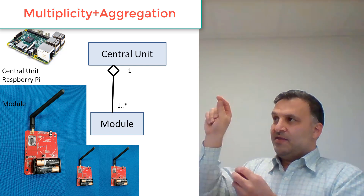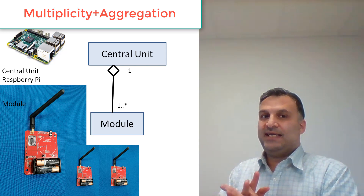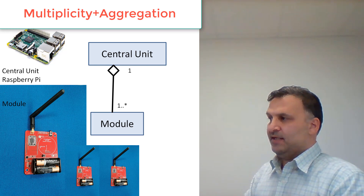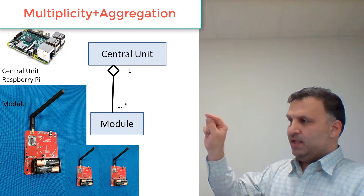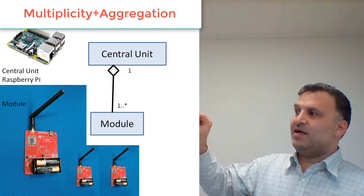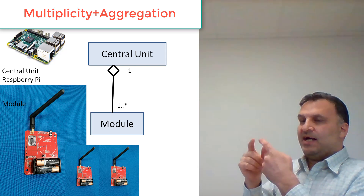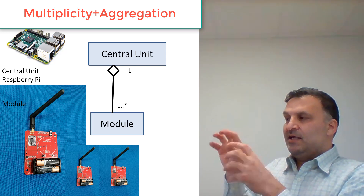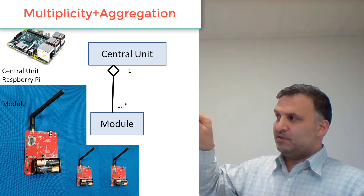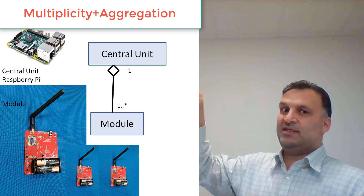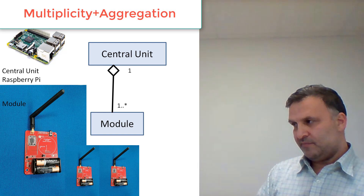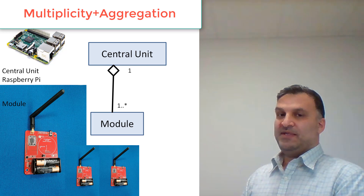This non-permanent relationship is called aggregation, represented with a hollow diamond. Another relationship shown here is multiplicity — we see numbers like 1 and 1..* (one to many). The number 1 on the side of the central unit means one module is related to one central unit. To find this number, we set the count of objects from one side related to one object from the other side.